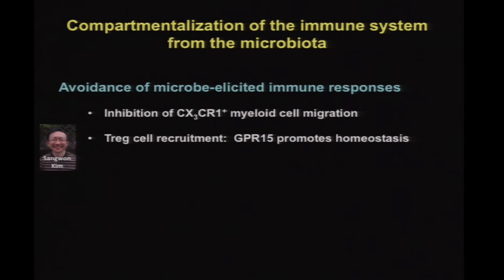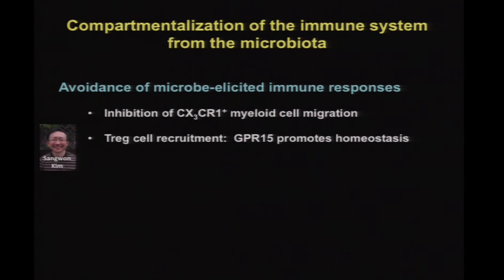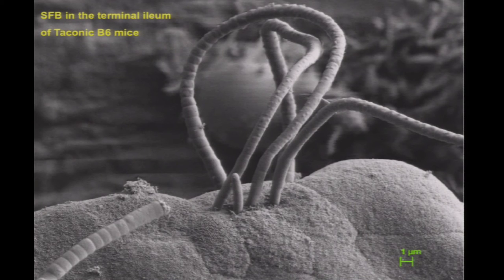Sang-Gwon Kim has been doing work on regulatory T cell recruitment to the lamina propria, and he found that an orphan G-protein coupled receptor, GPR15, that's expressed preferentially on regulatory T cells, is involved in the migration of these cells to the large intestine lamina propria, where we think they promote homeostasis.